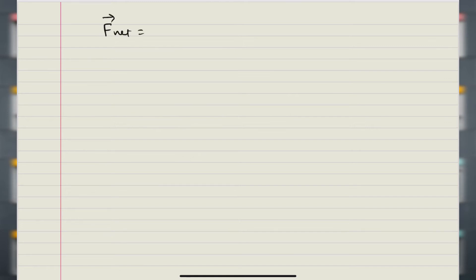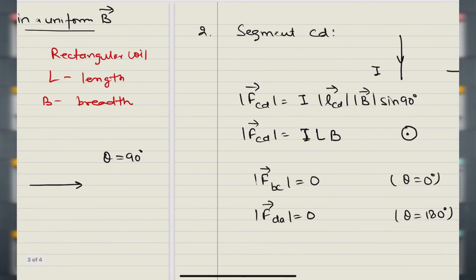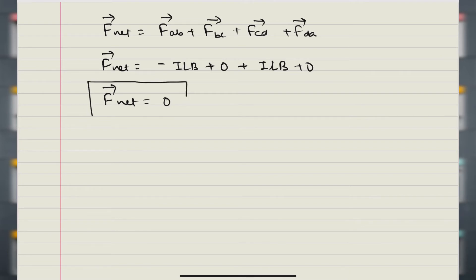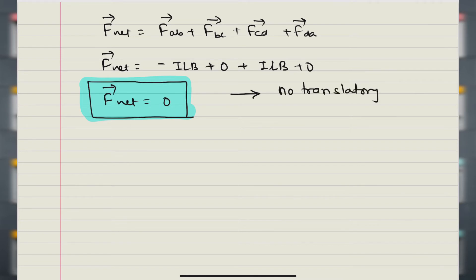If we talk about the net force in vector form: F_net = F_AB + F_BC + F_CD + F_DA. F_AB is going into the paper so it is −ILB; F_BC was 0; F_CD is +ILB (coming out of the paper); F_DA is 0. So net force = 0. Net force being zero means the body (the coil) will not translate — there is no translatory motion; the coil will not move up, down, left, or right.